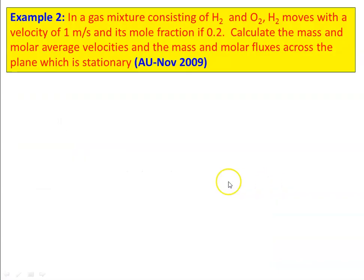Example number 2. In a gas mixture consisting of H2 and O2, H2 moves with a velocity of 1 meter per second and mole fraction is 0.2. Calculate the mass and molar average velocity, and mass and molar fluxes across a stationary plane. This is from the November 2009 question paper.